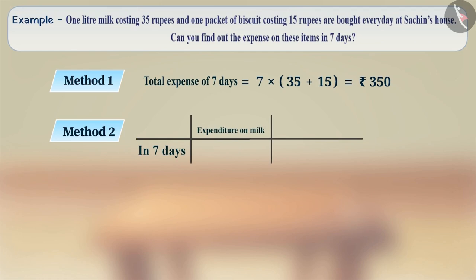Method 2: First, we will find the amount spent on milk in 7 days, which will be 7 into 35. Similarly, we will find the amount spent on the packet of biscuits in 7 days, which will be 7 into 15. Then we will add them and get the total expenditure.